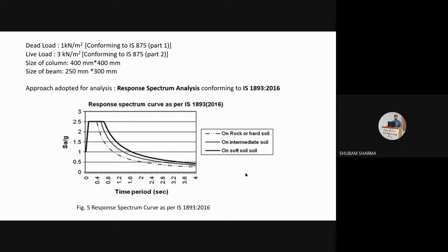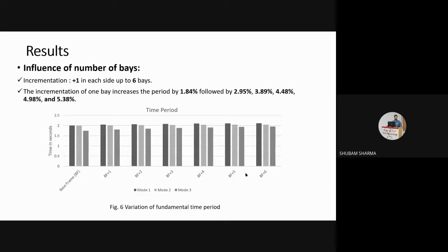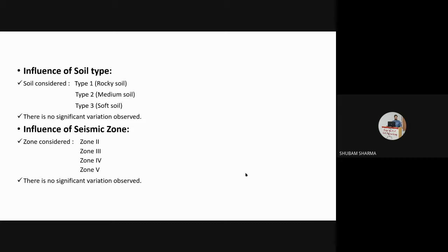The approach adopted for analysis is Response Spectrum Analysis conforming to IS 1893:2016. Results on the effect of number of bays on fundamental time period: adding 1 bay in X and Y direction increases fundamental period by 1.84%; adding 2 bays increases it by 2.95%; for 3, 4, 5, and 6 additional bays the increases are 3.89%, 4.48%, 4.98%, and 5.38% respectively. Influence of soil type and seismic zone: no significant variation in fundamental period was observed across different soil types (Zones 2, 3, 4, 5).